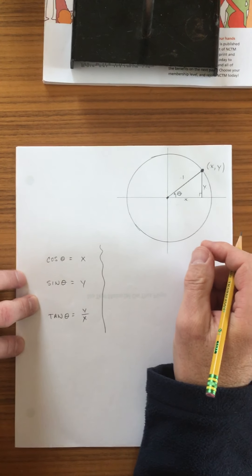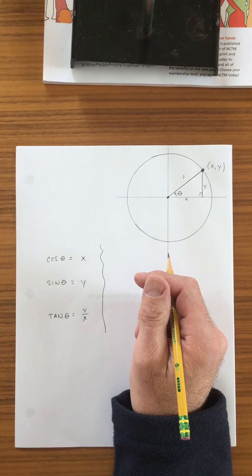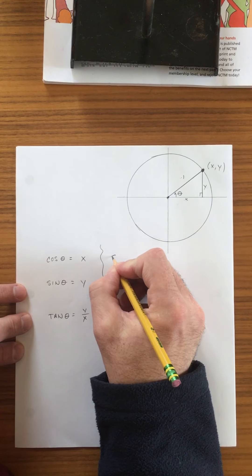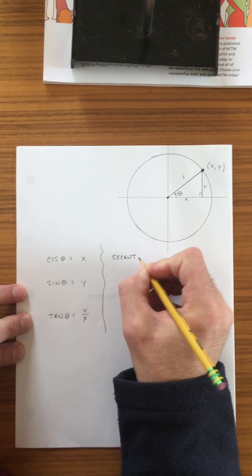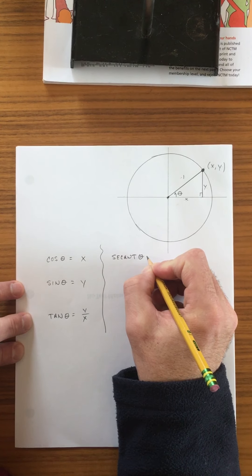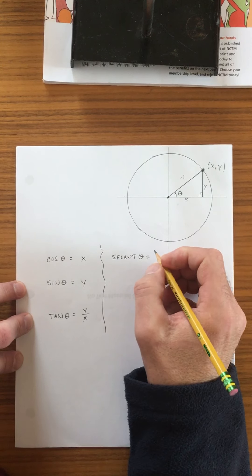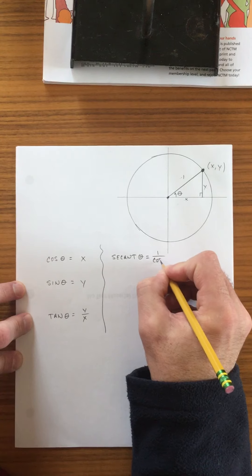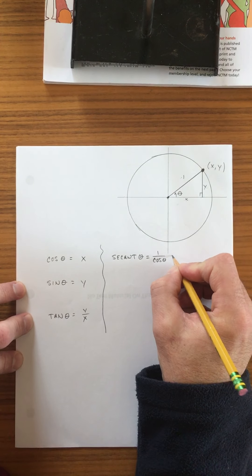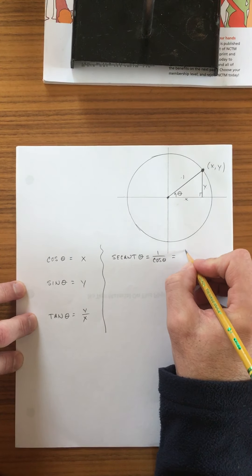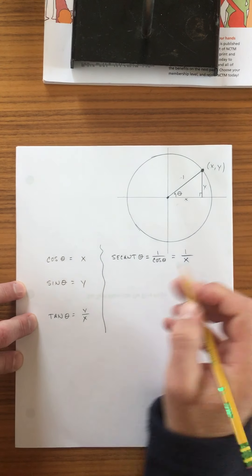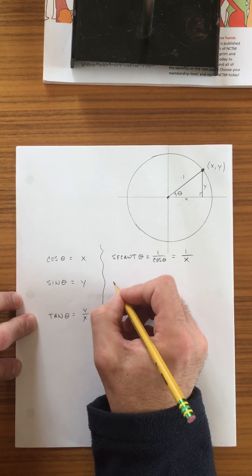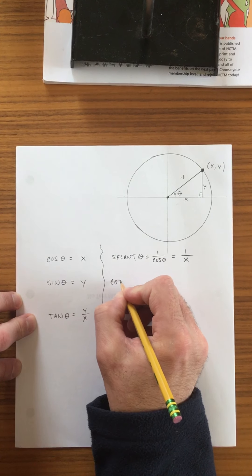Now, it turns out that there are inverse functions. And the first one is secant. And the secant of an angle is defined as one over the cosine of the angle. And we know that cosine is x. So the secant of an angle is one over x.